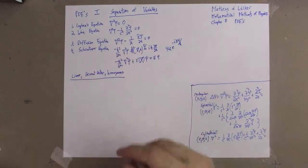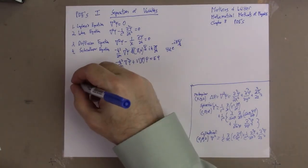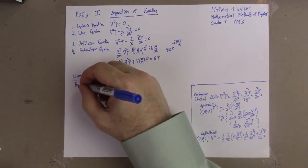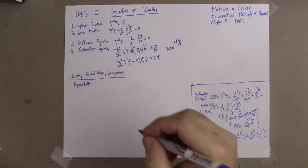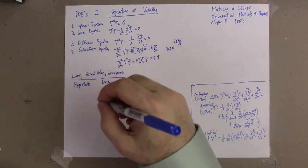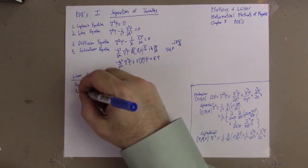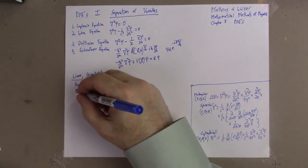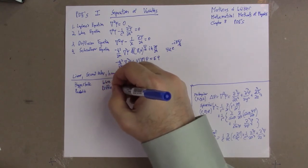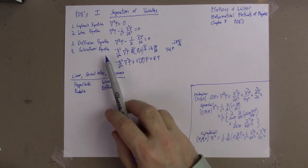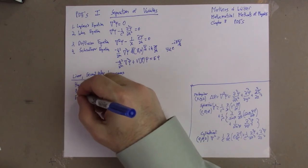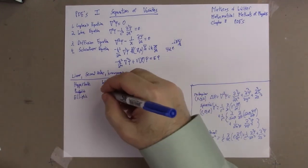These are the type: linear, second order, homogeneous. Usually they separate into three types. I won't go into the whole theory of this—you can look in chapter 8 of Matthews and Walker and get more detail—but we call them, you might see these terms every now and then: hyperbolic (the wave equation would be hyperbolic), parabolic (the diffusion would be an example of that), and the Schrödinger equation is sort of a diffusion equation but it's got imaginary constants and that makes it a little bit different. Then we have elliptic equations, like the Laplace equation is an elliptic equation.